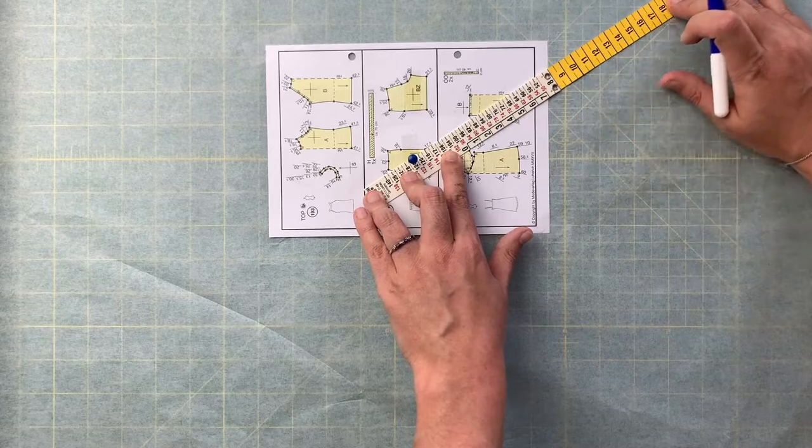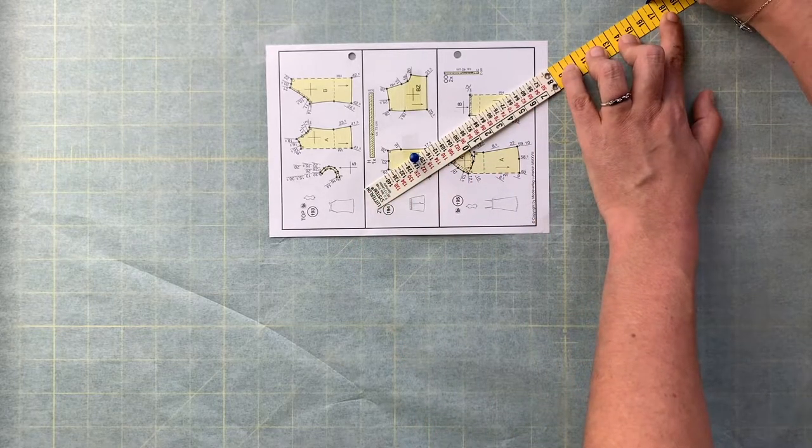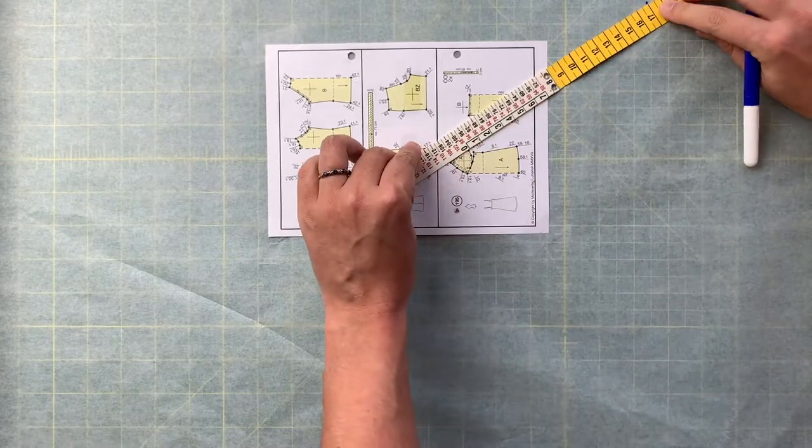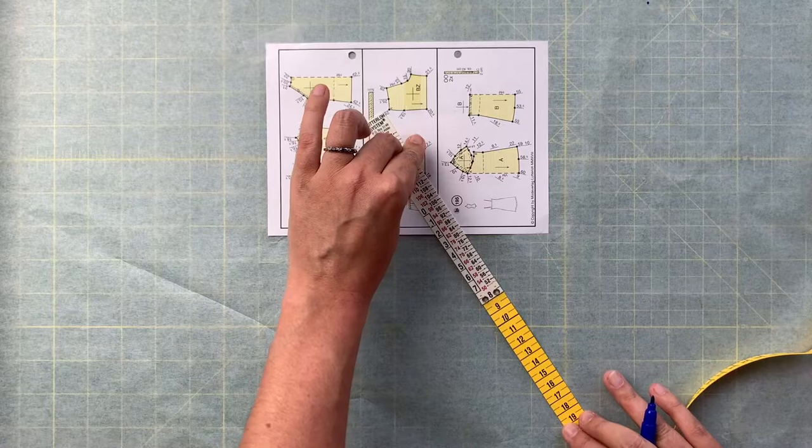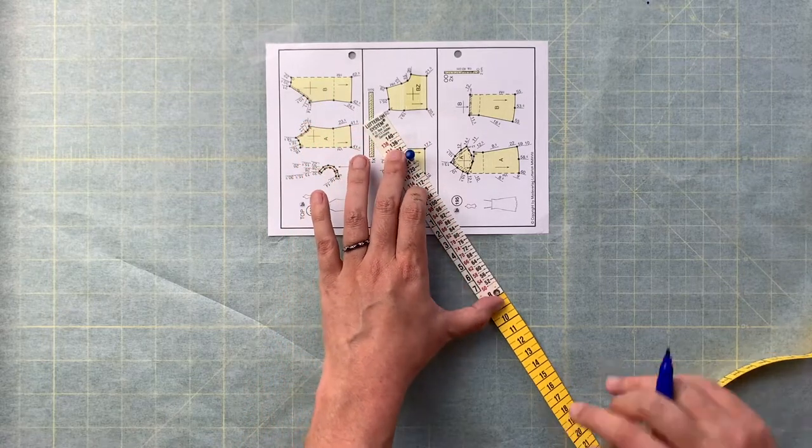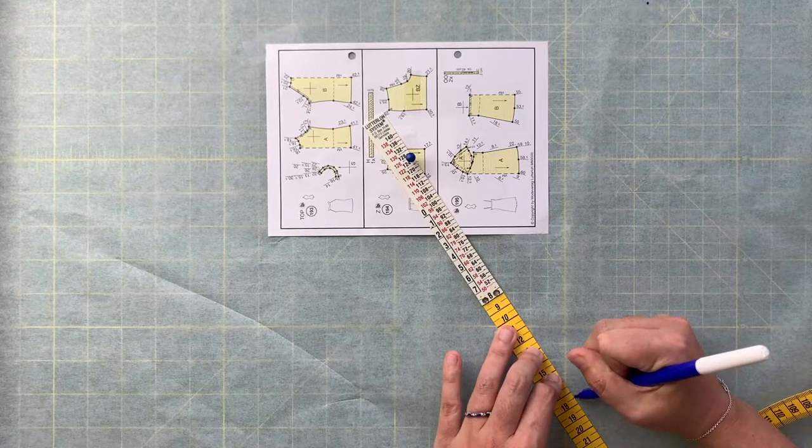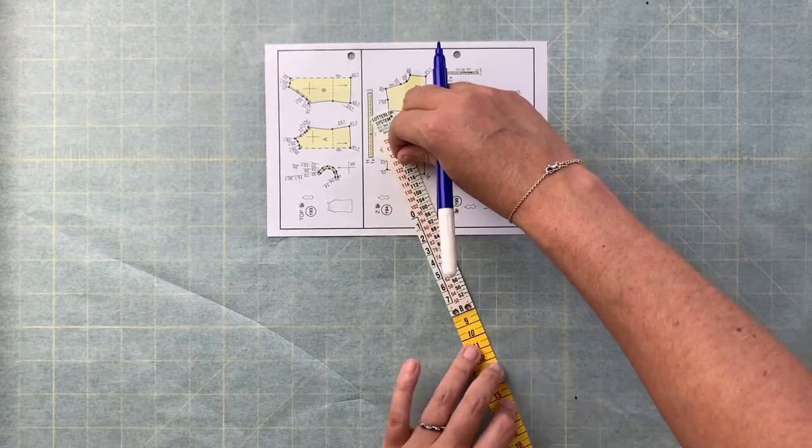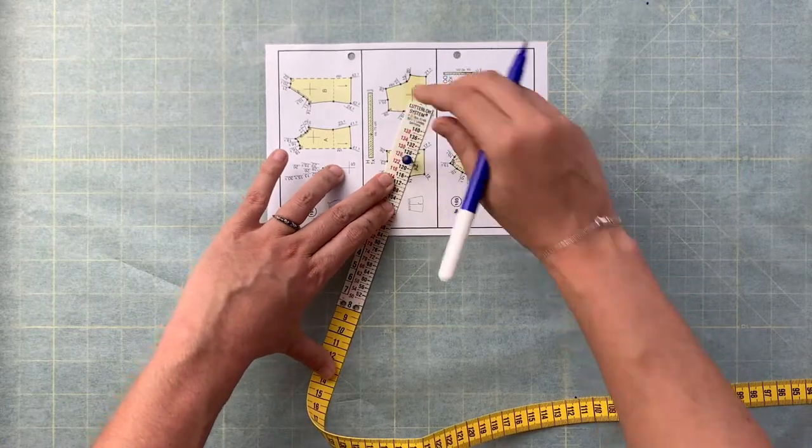Then you come around until you find another dot with a line. That one says 18, so we're going to come all the way out here and put a mark at 18. And you just continue going around marking all of the dots.